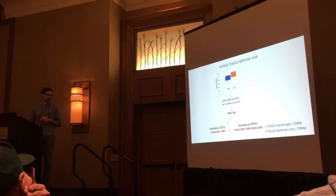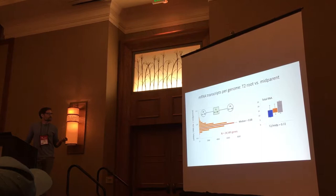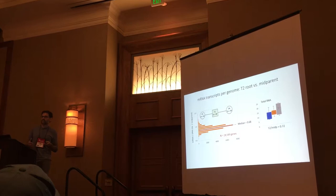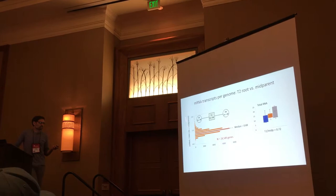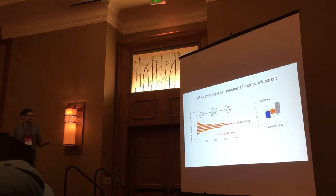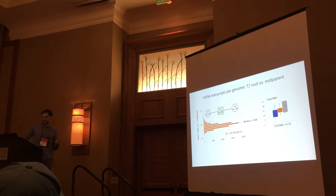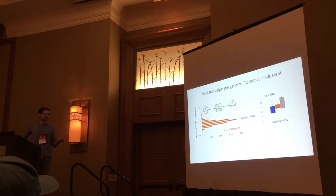Here are the results for T2 root tissue, showing the distribution of transcriptome size estimates. For each gene in the dataset we get a separate estimate of transcriptome size, and this is the distribution of those estimates for the polyploid relative to its mid-parent. mRNA transcriptome size gives a median estimate of about 0.68 — again, about two-thirds of the level of mRNA per unit of DNA in the polyploid as in the mid-parent. This is strikingly similar to what we see for total RNA, suggesting mRNA and total RNA transcriptomes are coordinated.